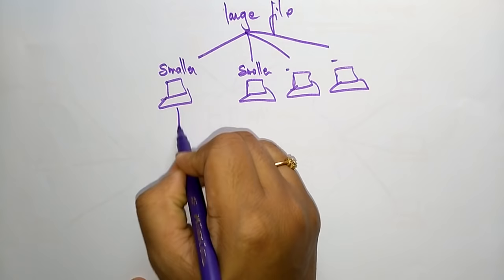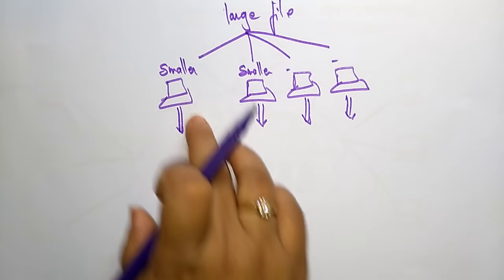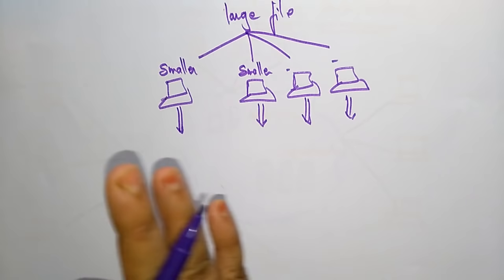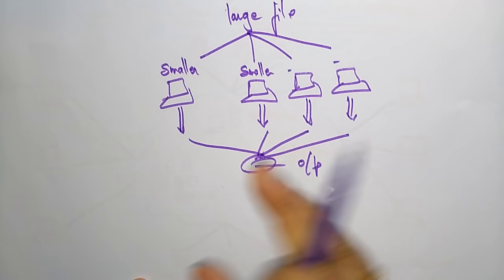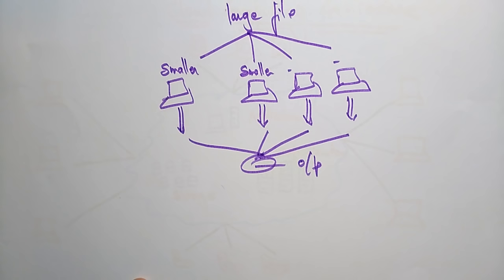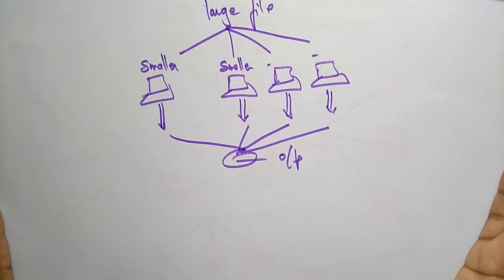These pieces are processed in parallel with no interactive workload between systems. As a result, completion is achieved in a smaller amount of time. Now let's take a simple example comparing a desktop computer with parallel grid computing.